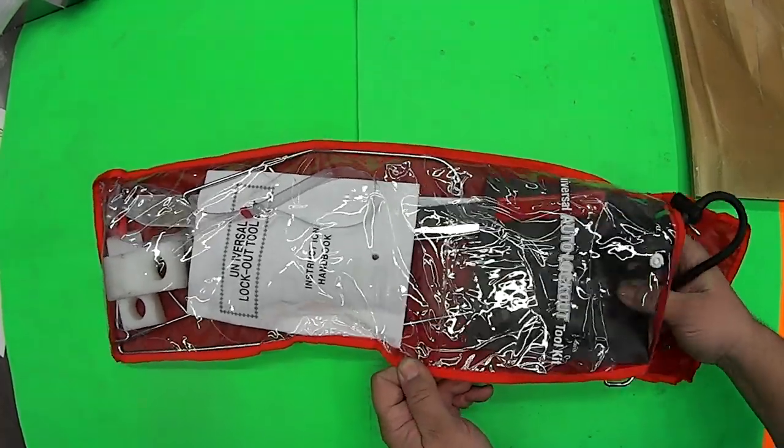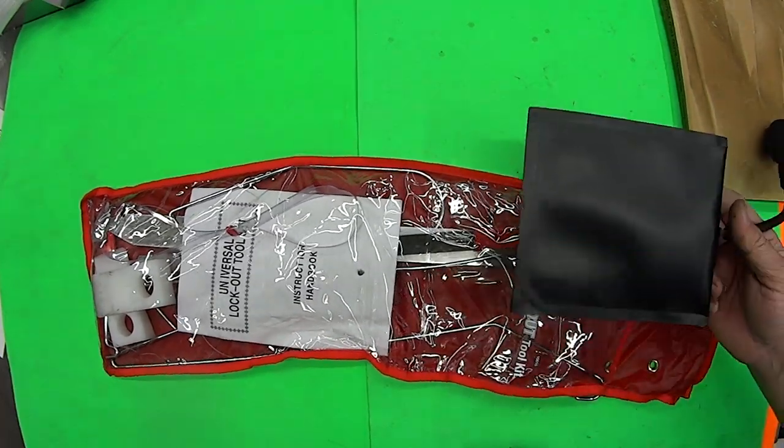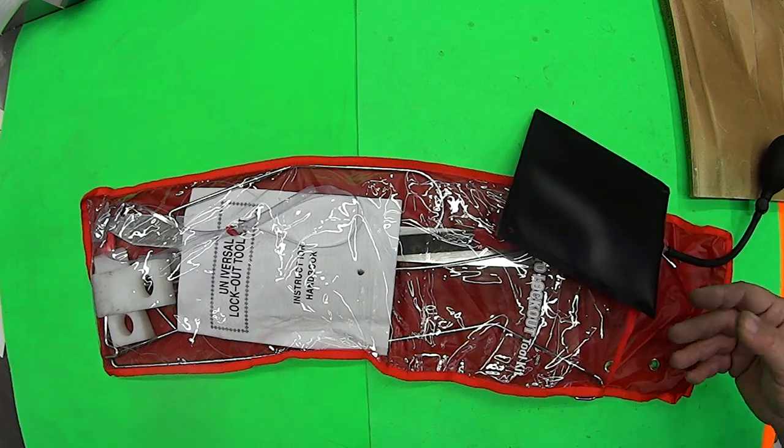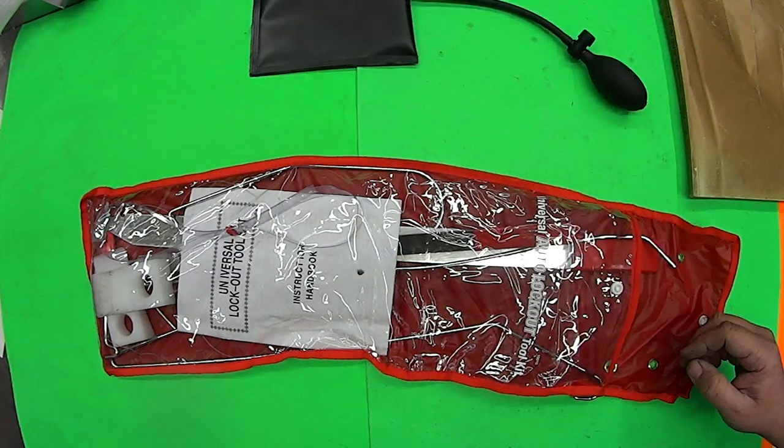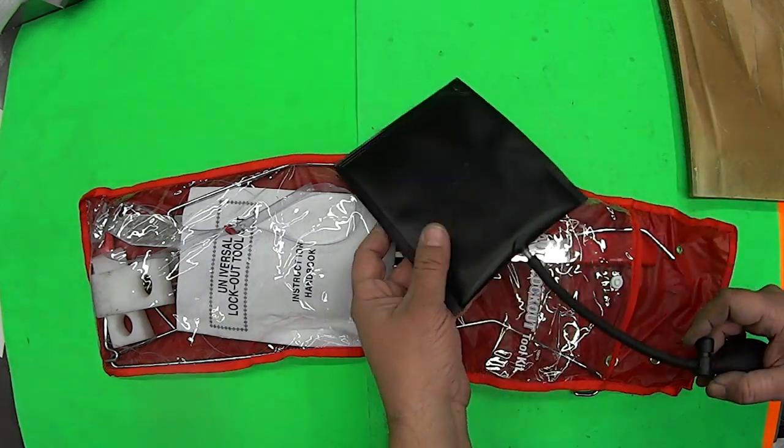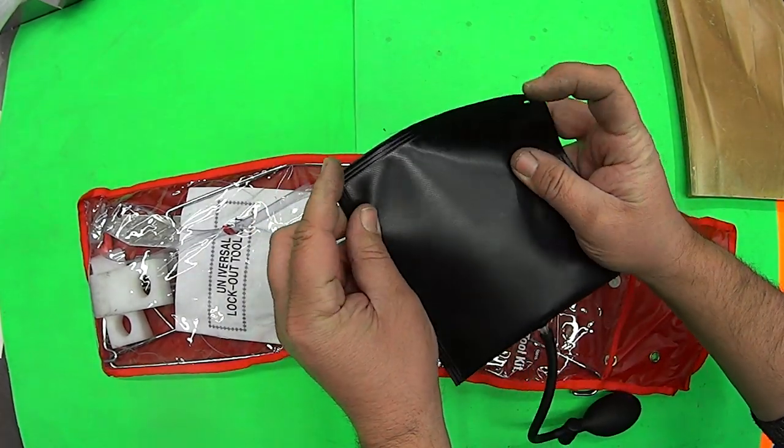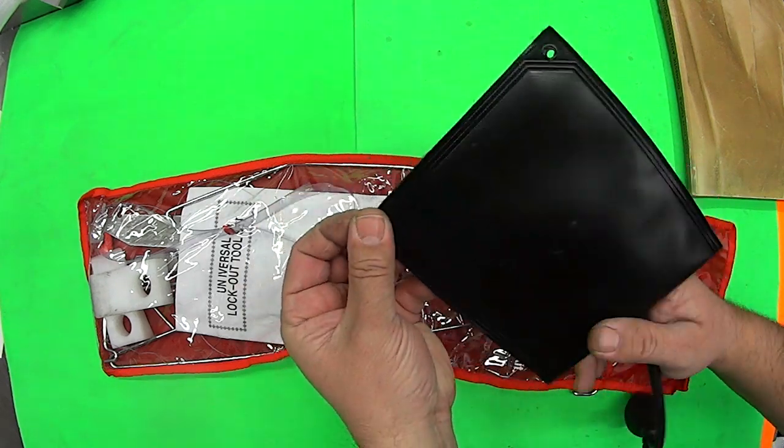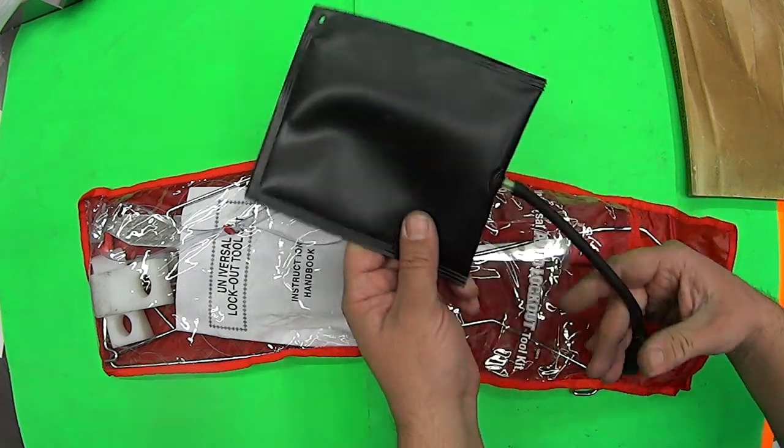First out of the bag, now this will set you back anywhere from 40 to 140 bucks depending on where you buy it, depending on your currency. You get an air wedge, that's what it's called in the trade. By all rights it is an air wedge. The corners are very sharp, they'll probably rip the car rubber when you're trying to insert it but it most likely will do the job if you're talented you could use it.